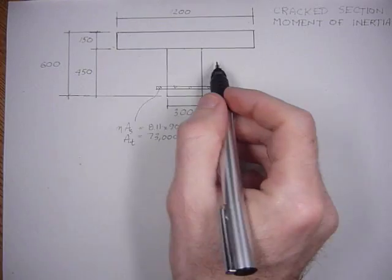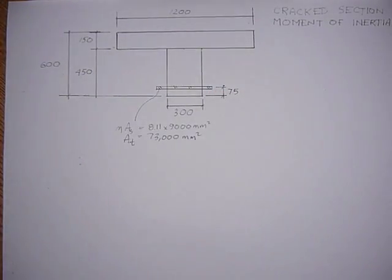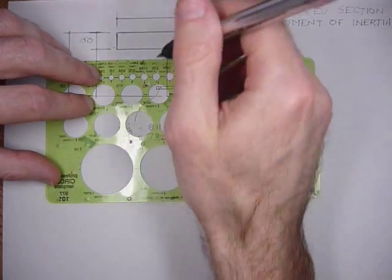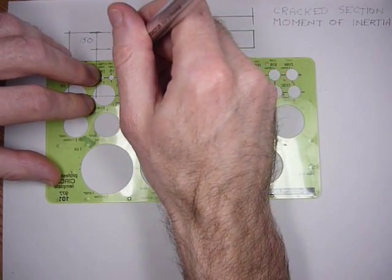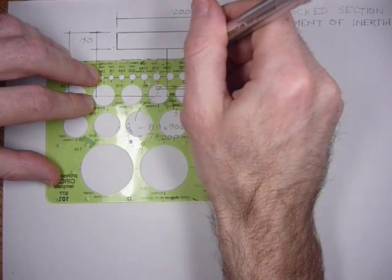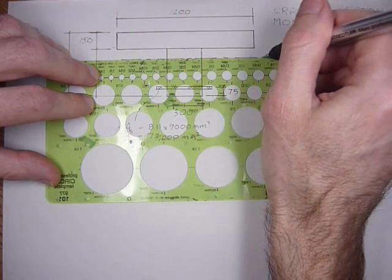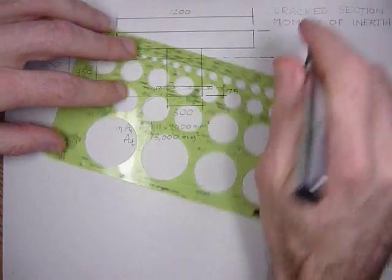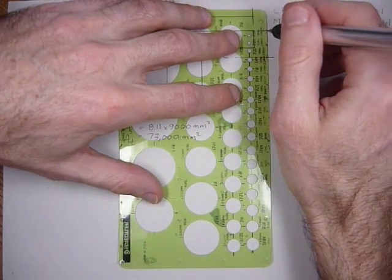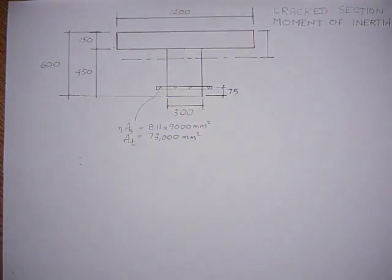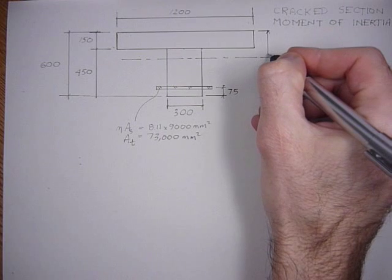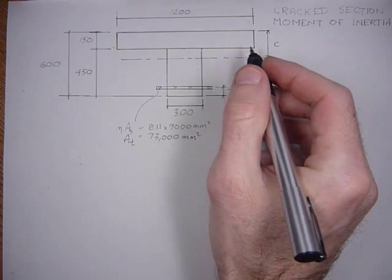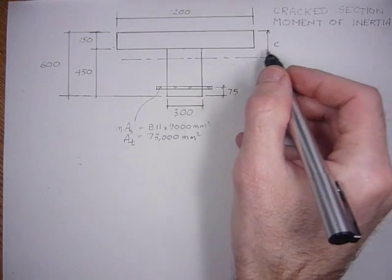To solve for the neutral axis, we'll take static moments about the neutral axis, which is an unknown — we don't know where it is. I'm going to draw it in here for now; it's not going to be to scale, but it'll give you an idea of what we're trying to do. This distance here is an unknown, it's C, and we'll have to take static moments about this axis and solve for it.